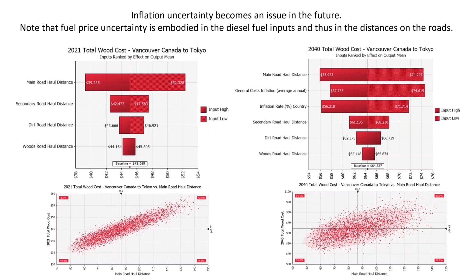On the right is 2040. You still have main road haul distance, but now you see inflation creeping into the picture for the wood costs. And as some of you know, if you drag one of the bars off of a tornado chart and throw it off to the edge, you get a nice scatter plot of the simulation inputs that are behind that particular bar.